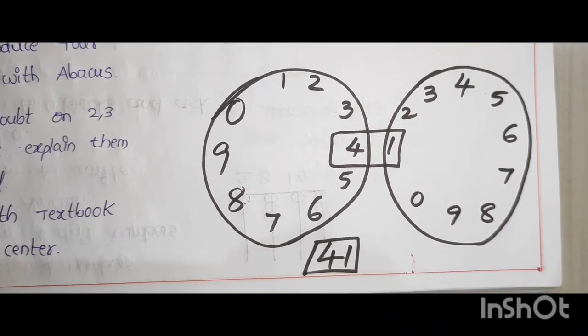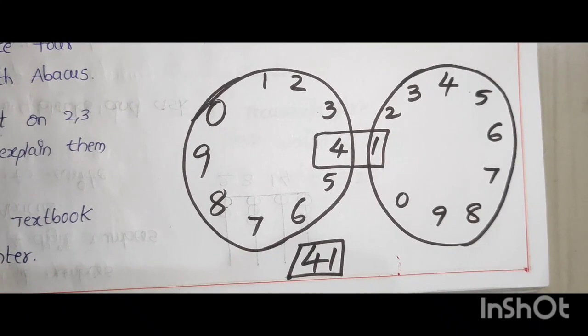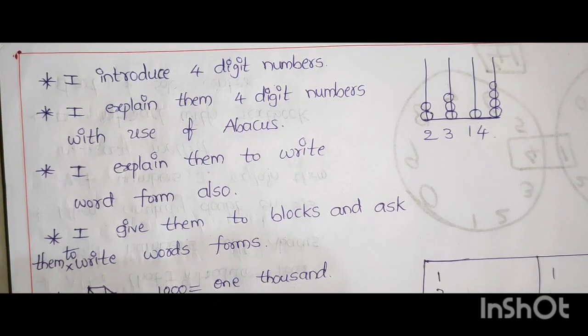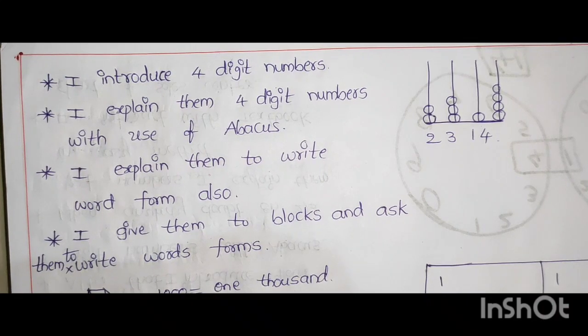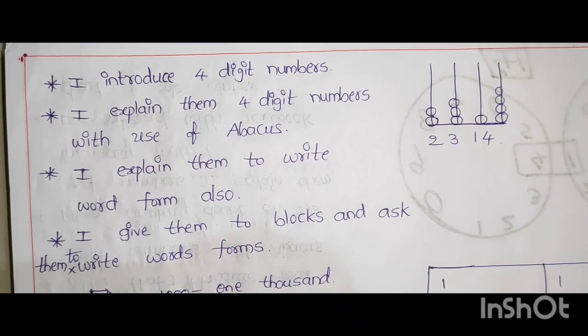This is the 2 digit numbers. This is the 2 digit number recalling with TLM of circles. 41. I introduce 4 digit numbers. I explain them 4 digit numbers with use of abacus. 2314.